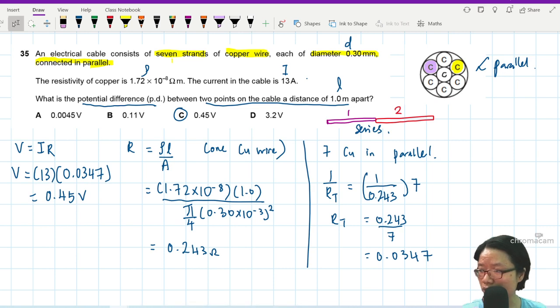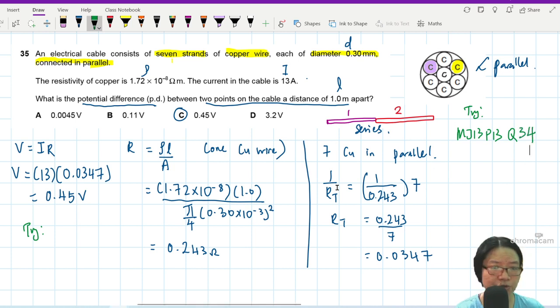If you want to try out a similar question from past years, I have one that I stole this diagram from. You can try right here: May/June 2013, Paper 13, Question 34. That's it, pretty straightforward cables and resistance.